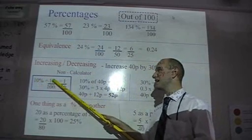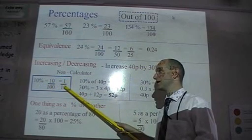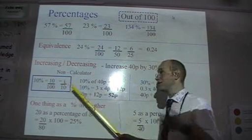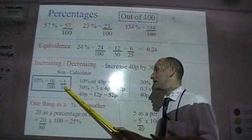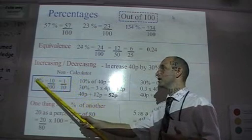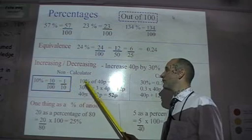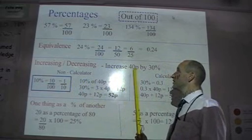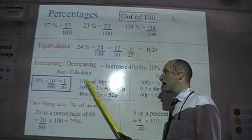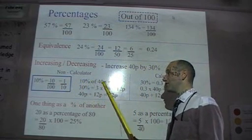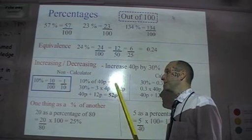10% is 10 out of 100, which is the same as 1 out of 10. Now, 1 out of 10 is a tenth, or you divide something by 10. So to find 10%, we divide something by 10. In this case, if we want to increase 40p by 30%, non-calculator, find 10% of 40, which is 4, because 40 divided by 10 is 4.